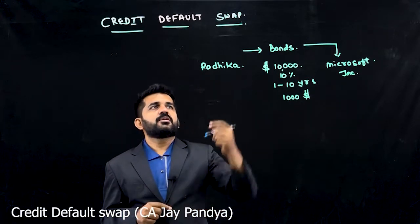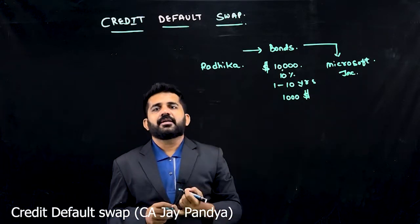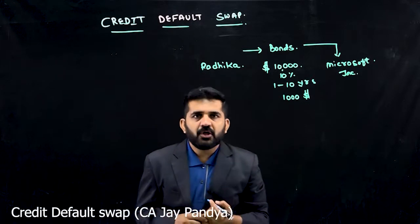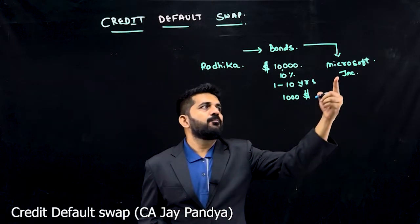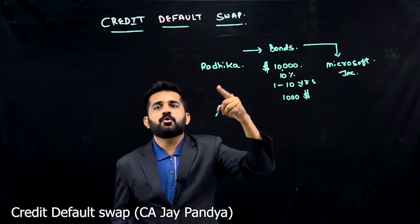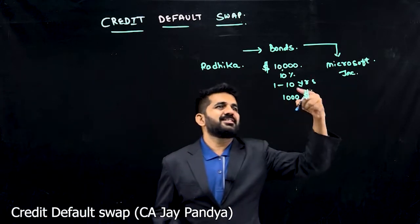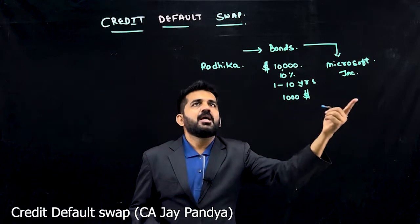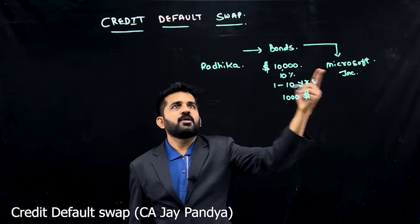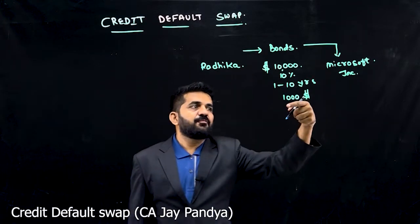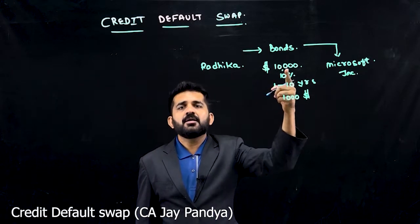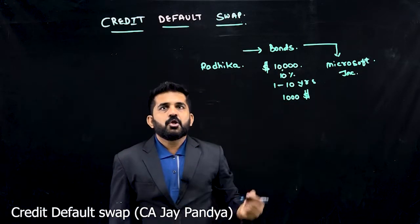Now, there is one risk which Radhika carries, which is a credit default risk. What is credit default? If Microsoft Incorporation is unable to pay because it is going into liquidation or insolvency, then forget about the interest — she will also be losing the principal.